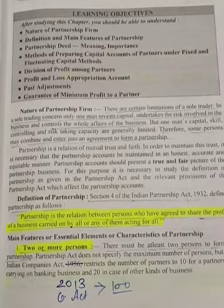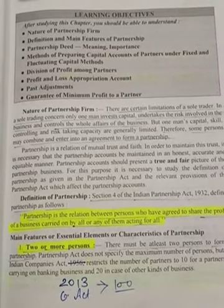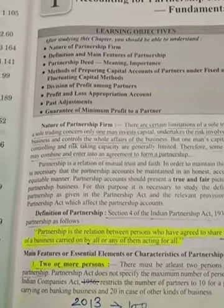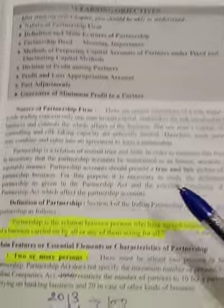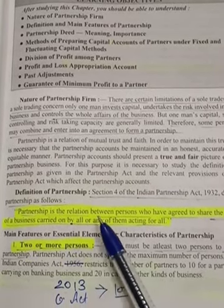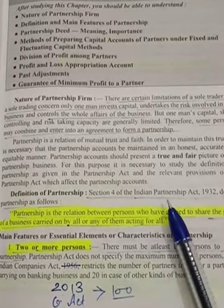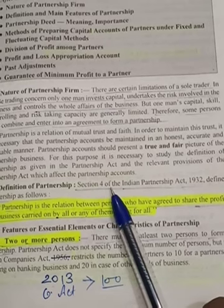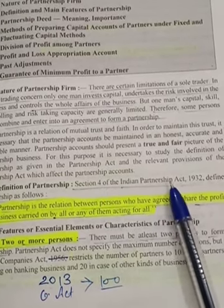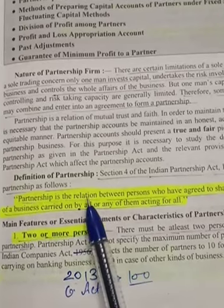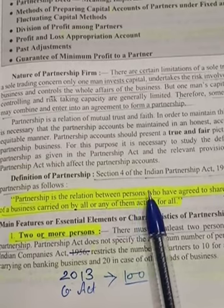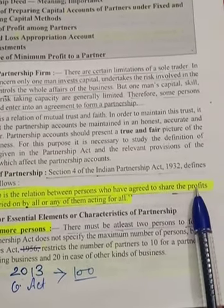First of all we will know about the meaning of partnership. Partnership is the agreement between two or more persons who have agreed to share the profits of a business. According to section 4 of the Indian Partnership Act 1932, partnership is the relation between persons who have agreed to share the profits of a business.